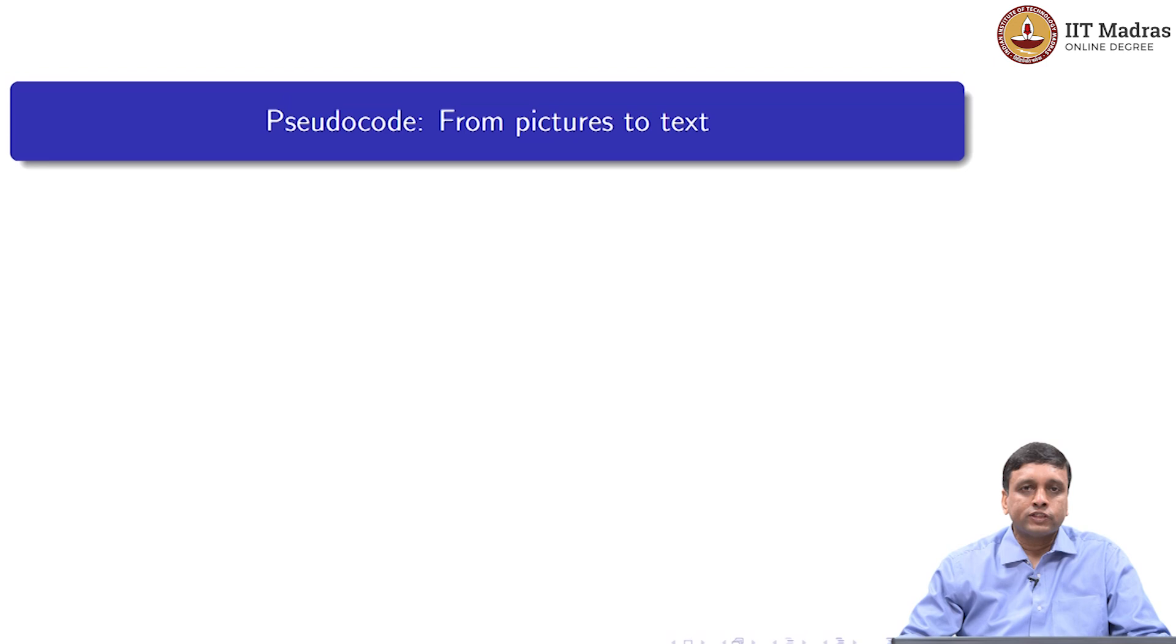So, we have seen that we can use flowcharts as a way to describe algorithms precisely. Now, we will look at a different notation, which we call pseudocode, which is actually a textual representation of procedures.